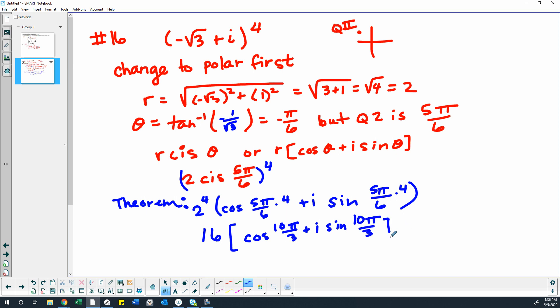So that would be 10 pi 3rds plus i sine of 10 pi 3rds. It would be nice if we knew what 10 pi 3rds represents, right? So 10 pi 3rds, I'm going to subtract out 6 pi 3rds to get a coterminal angle of 4 pi 3rds.